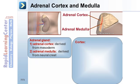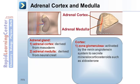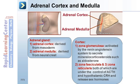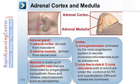The cortex can be further divided into three zones. The zona glomerulosa, which is activated by the renin-angiotensin system to secrete mineralocorticosteroids such as aldosterone. The second area is the zona fasciculata, and the third is the zona reticularis, both of which are under the control of ACTH and hypothalamic CRH, and both release sex hormones. The medulla is made up of chromaffin cells that are innervated by preganglionic sympathetic fibers and release catecholamines such as epinephrine.